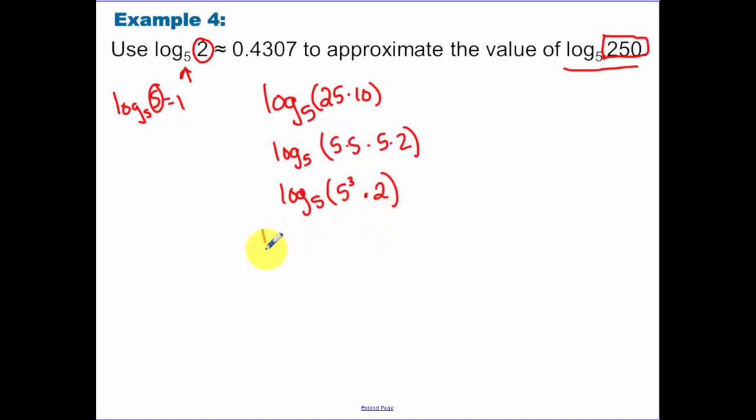So really this is log base 5 of 5 to the 3rd times 2. Now because we're multiplying, I can break this down under addition. I can bring the 3 down in front, 3 times the log base 5 of 5 plus log base 5 of 2, 3 times 1 plus the value they give me. So I have 3 plus 0.4307 is 3.4307.